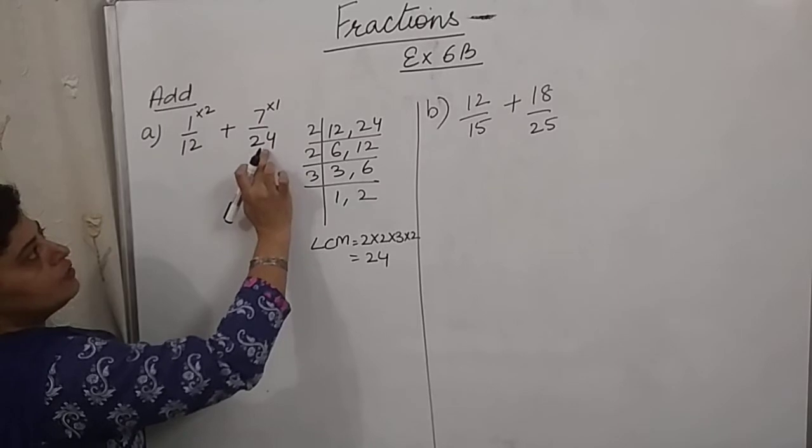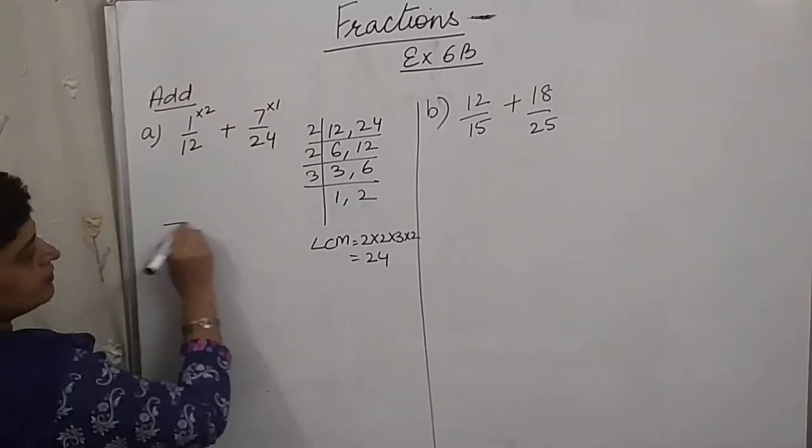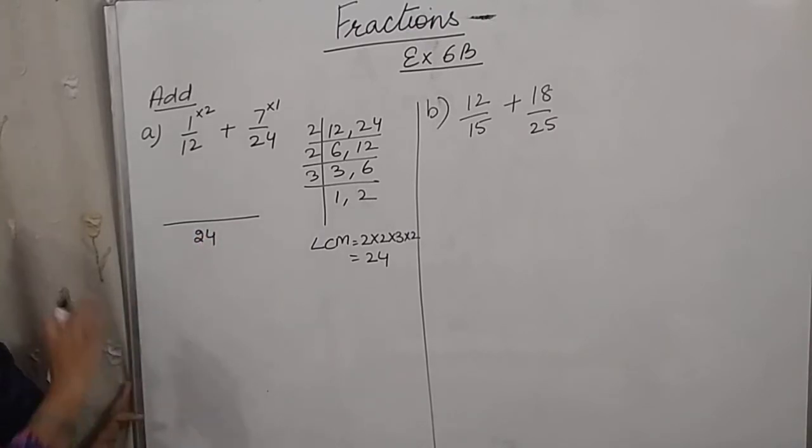12 into 2 is 24 and 24 into 1 is 24. Now we can write the LCM as common with a line in between.